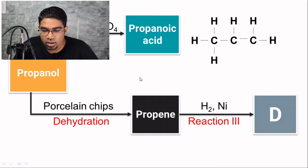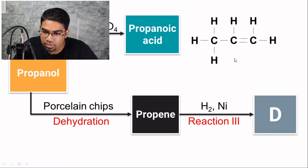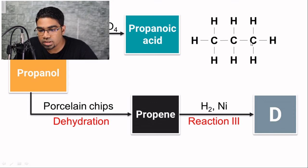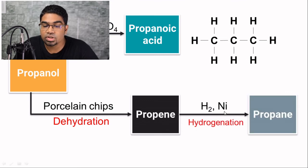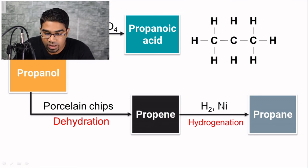Now what happens when propene is reacted with hydrogen gas? Alkenes are highly reactive because of the carbon-carbon double bond, making them unsaturated. Other substances can fill in at the double bond. When propene reacts with hydrogen gas, the carbon-carbon double bond breaks, and hydrogen atoms bond to both carbons where the double bond was. This is an addition reaction — specifically, when hydrogen is added, it is called hydrogenation. The resulting three-carbon compound with only carbon-carbon single bonds and no other functional group is propane, which is an alkane.